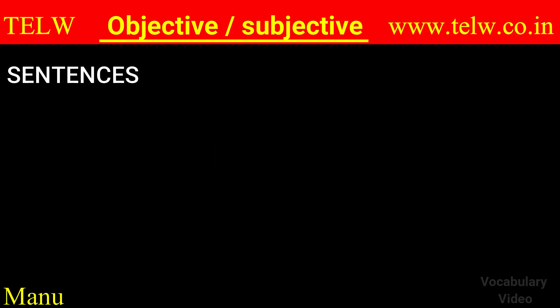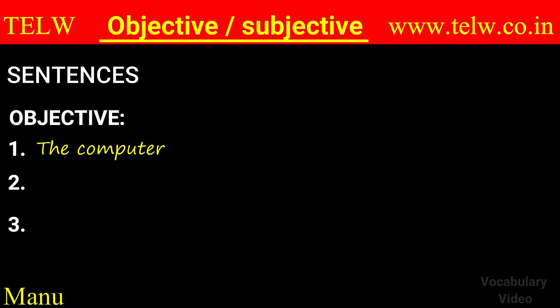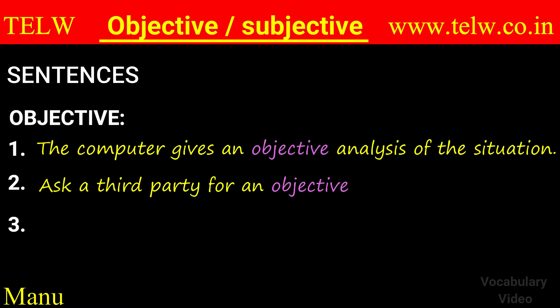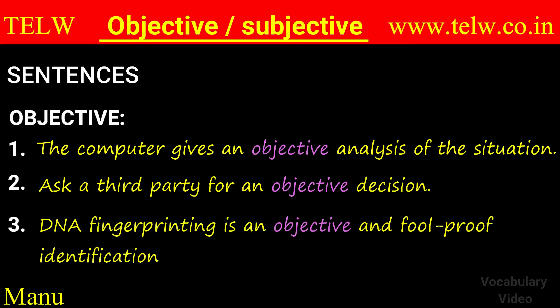Let's look at some sentences to know how they are practically used. First, objective: 'The computer gives an objective analysis of the situation.' 'Ask a third party for an objective decision.' 'DNA fingerprinting is an objective and foolproof identification process.'